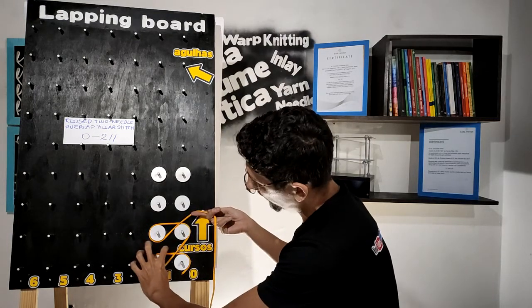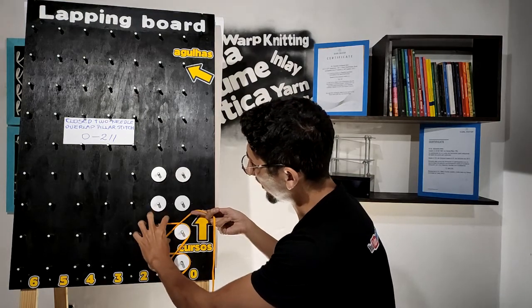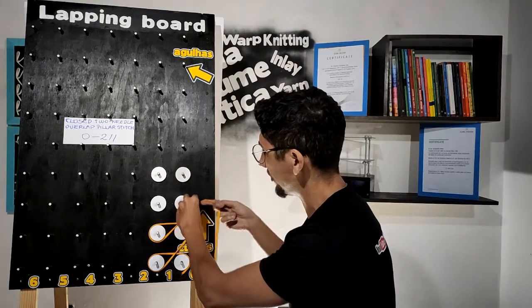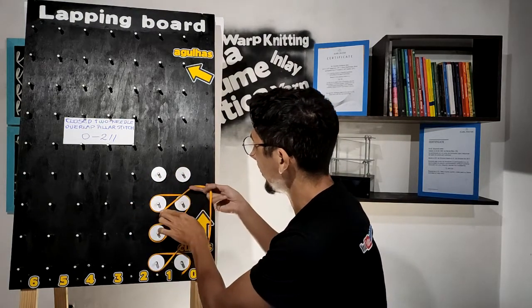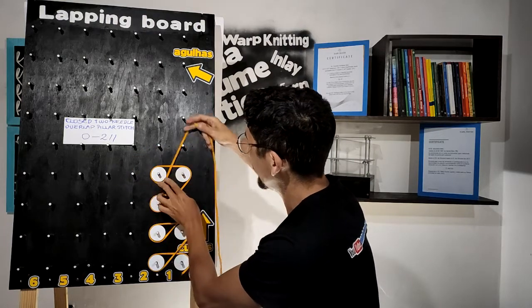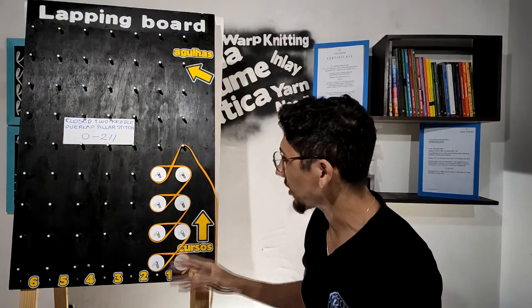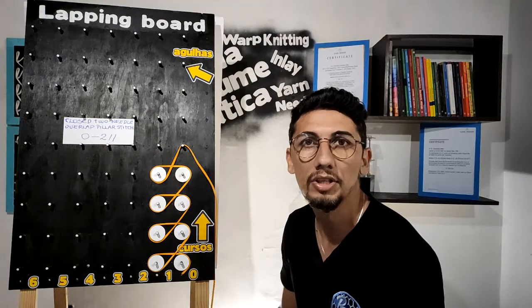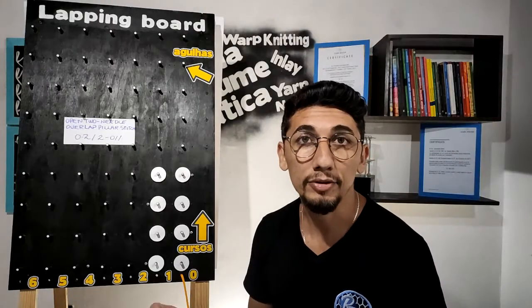Here we have the repeat, one more repeat, and we can do it on the next two needles: zero-two again and zero-two. This is the representation of the closed two-needle overlap pillar stitch on the lapping board.